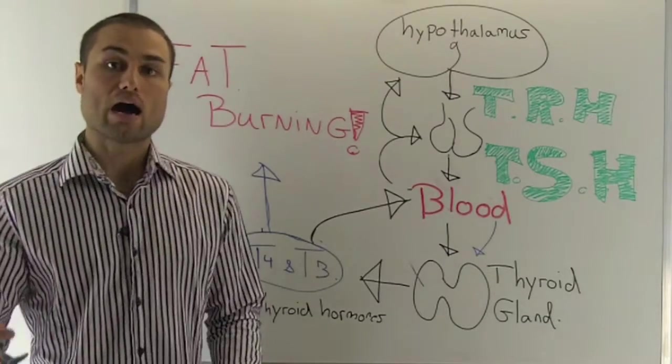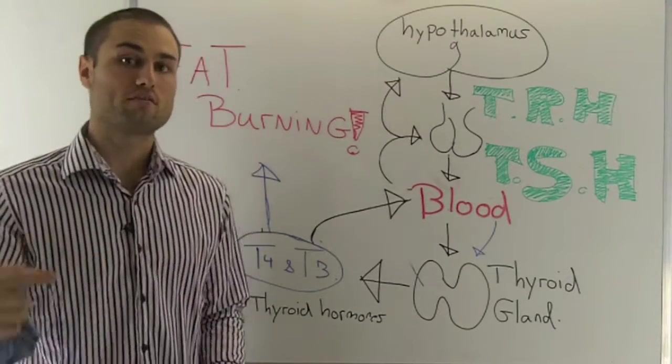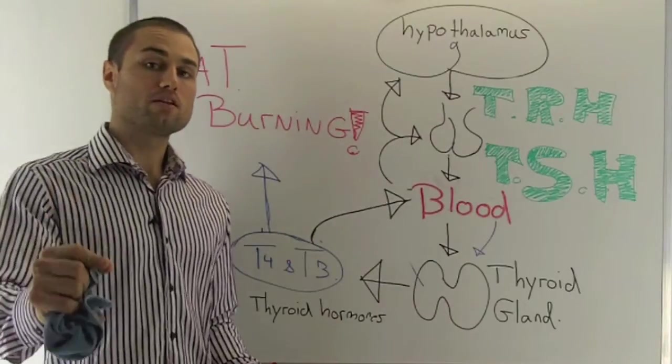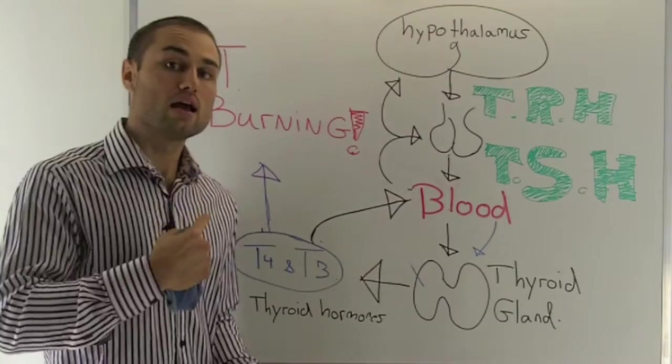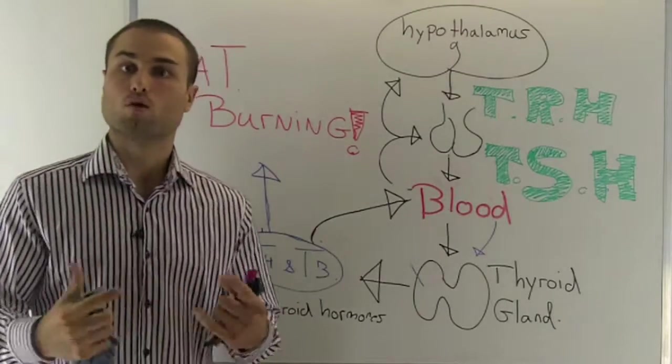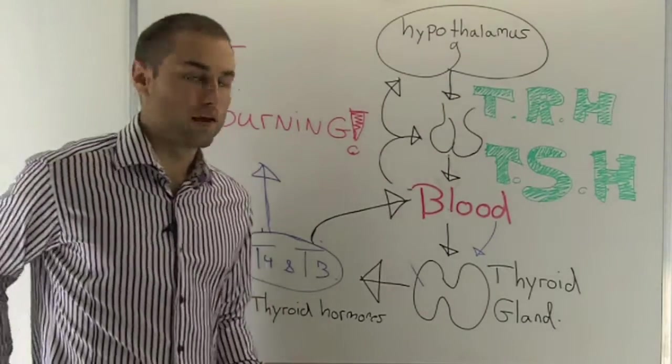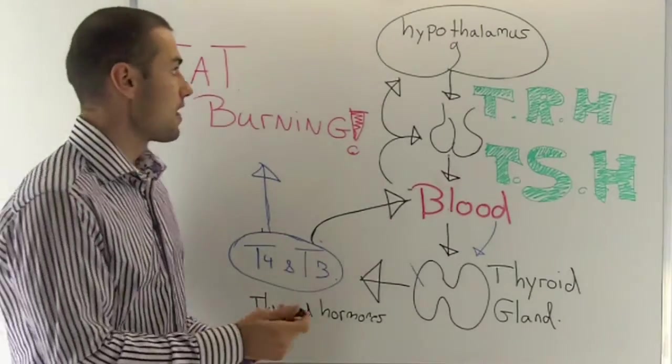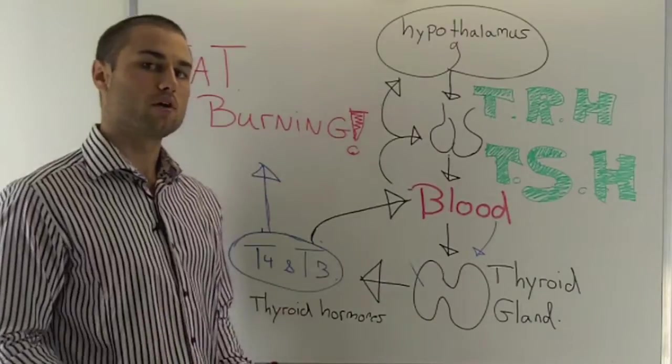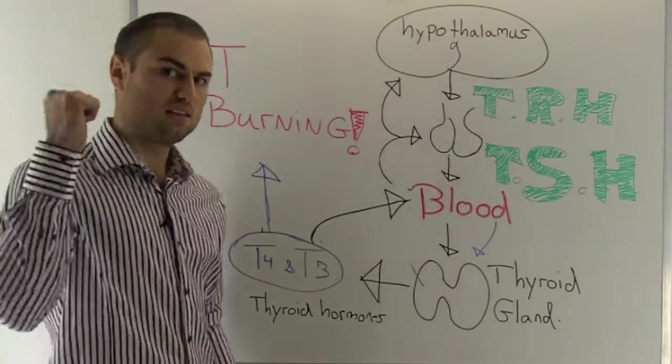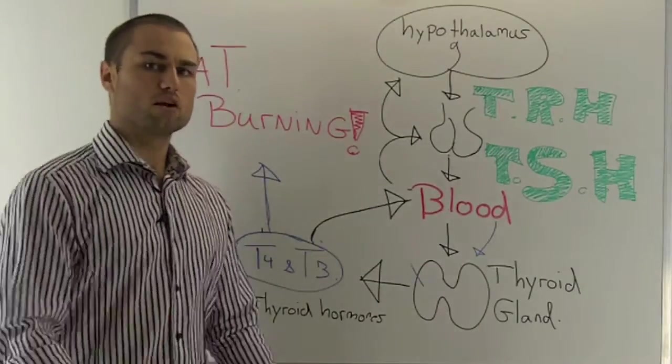Now before we begin today on how I'm going to explain to you the dangers of tap water, let me first explain to you how your metabolism works, how your thyroid gland actually affects your metabolic rate. So when we begin over here, you can see we have the hypothalamus. The hypothalamus is like your computer system in your brain. It's like the command center and it dictates in a sense, it's a general of the army.